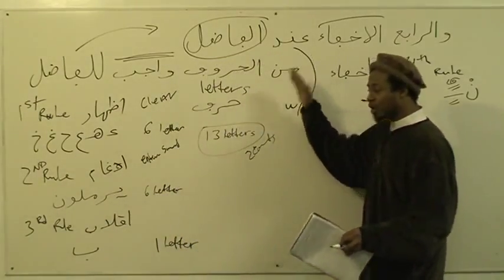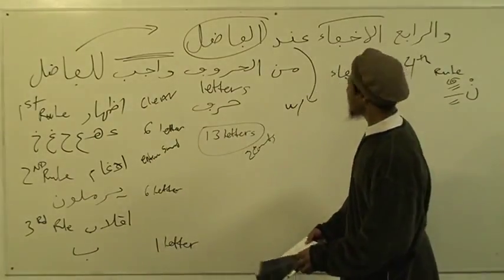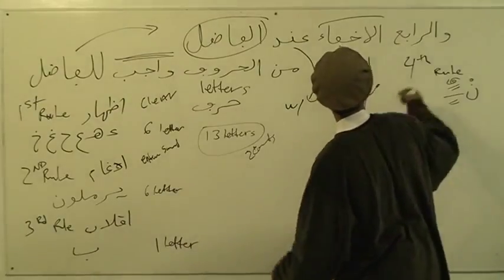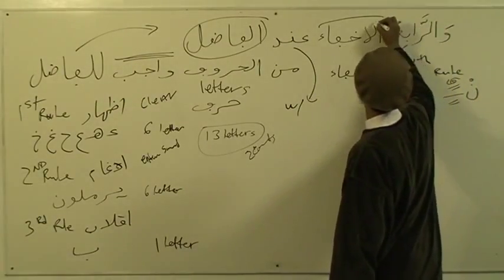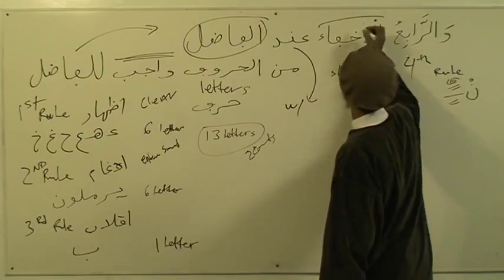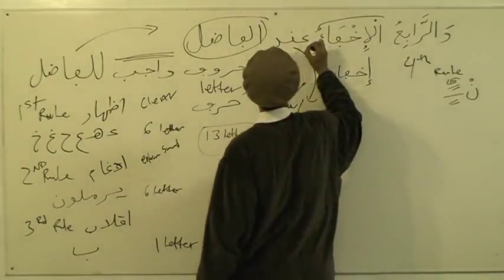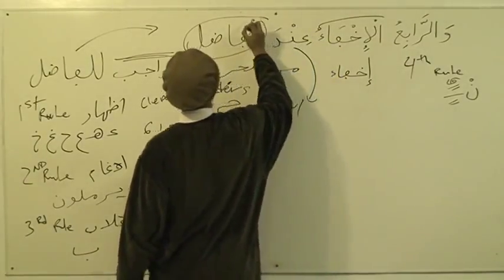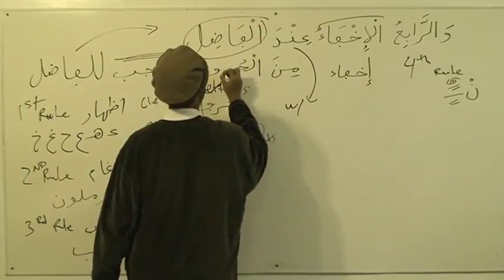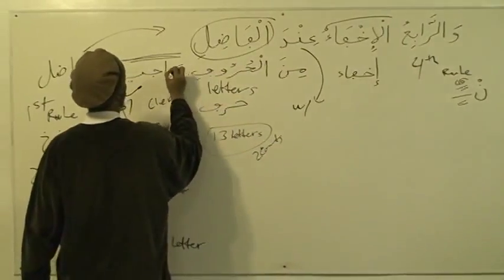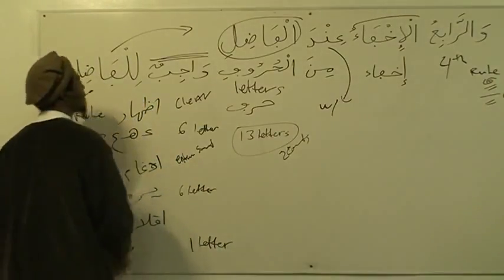We'll go through it right now and show you how to do it with the remainder of the letters, insha'Allah ta'ala. I'm finished at this point; we're going to go to the next line. وَالرَّابِعُ الْأَخْفَاءُ عِنْدَ الْفَاضِلِ مِنَ الْحُرُوفِ وَاجِبُنْ لِلْفَاضِلِ.